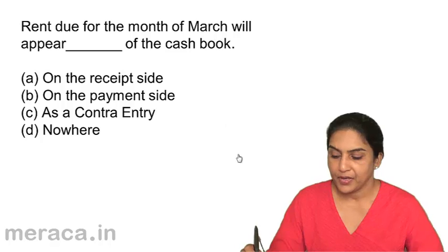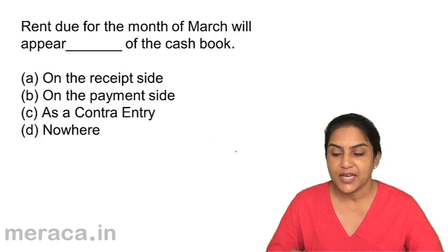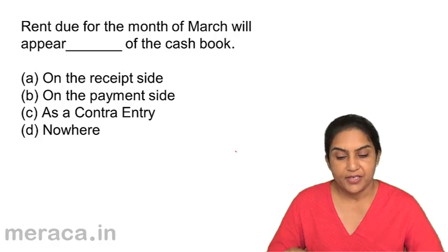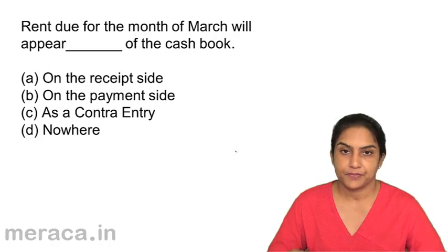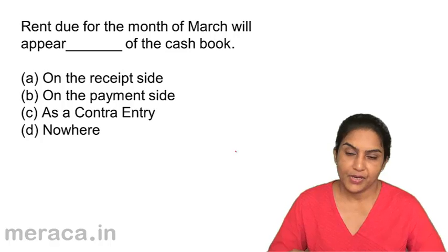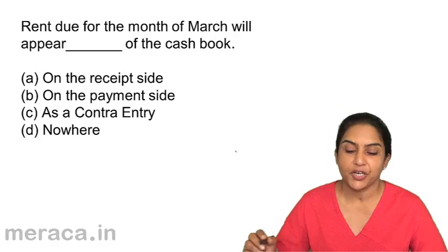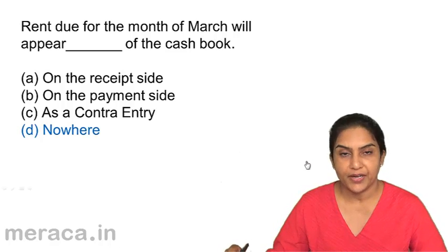Question 1: Rent due for the month of March will appear — dash — of the cash book. A: on the receipt side, B: on the payment side, C: as a contra entry, D: nowhere in the cash book. Rent due for the month of March will appear in the journal proper — it will not appear anywhere in the cash book. So the correct answer is D, nowhere.